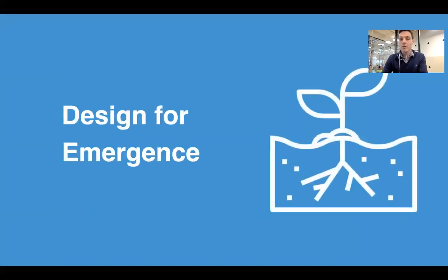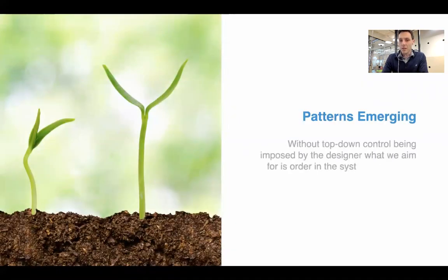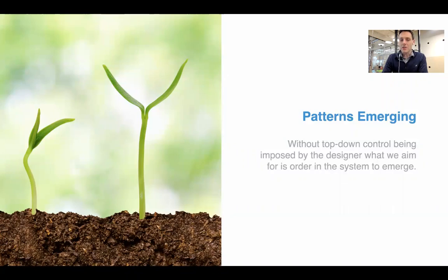We're in the final module in this section on open systems. Here we're talking about designing for emergence. Emergence is a very big idea in systems thinking. Without top-down control being imposed by the designer, what we aim for is ordering the system to emerge — very similar to the process of self-organization, which is an emergent process. This is what we see in complex systems of all kinds.